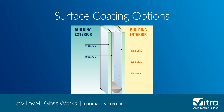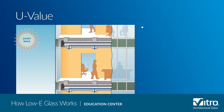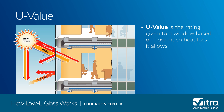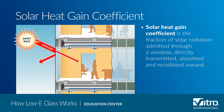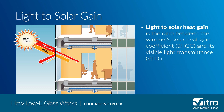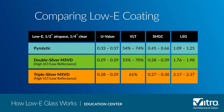Whether a low-e coating is considered passive or solar control, they offer improvements in performance metrics. U-value is the rating given to a window based on how much heat loss it allows. Visible light transmittance is a measure of how much light passes through a window. Solar heat gain coefficient is the fraction of solar radiation admitted through a window — directly transmitted, absorbed, and re-radiated inward. The lower a window's solar heat gain coefficient, the less solar heat it transmits. Light to solar heat gain is the ratio between the window's solar heat gain coefficient and its visible light transmittance rating. As a general rule, passive low-e coatings work well in heating dominated climates, while solar control low-e coatings are typically recommended for cooling dominated climates.